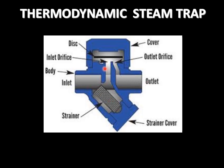When all the condensate is discharged to the outlet port, then the steam will begin to pass through this inlet orifice to the outlet orifice and will try to exit from this outlet port. But the speed of steam is far more than the condensate. So going by Bernoulli's principle, whenever there is an increase in velocity, there will be a sudden drop in pressure, and because of this pressure difference, the disk again moves back to its original position, thus closing the port and closing the connection between the inlet and the outlet orifice.